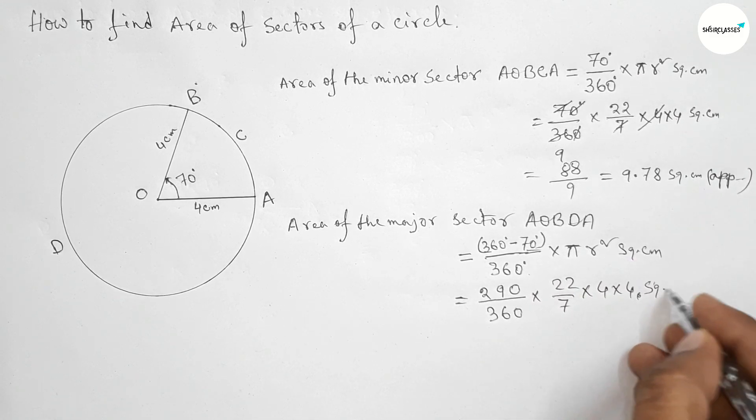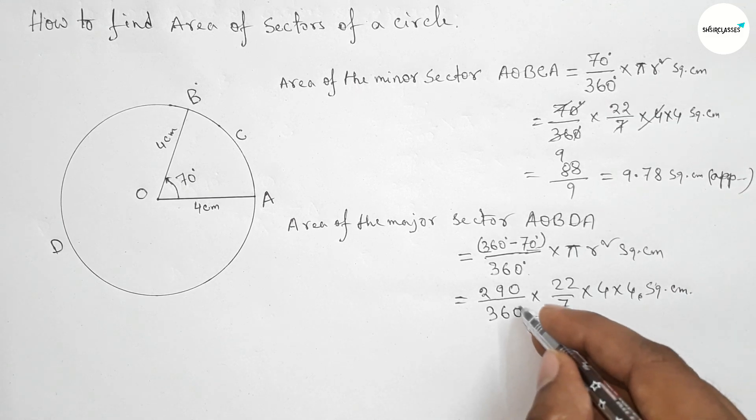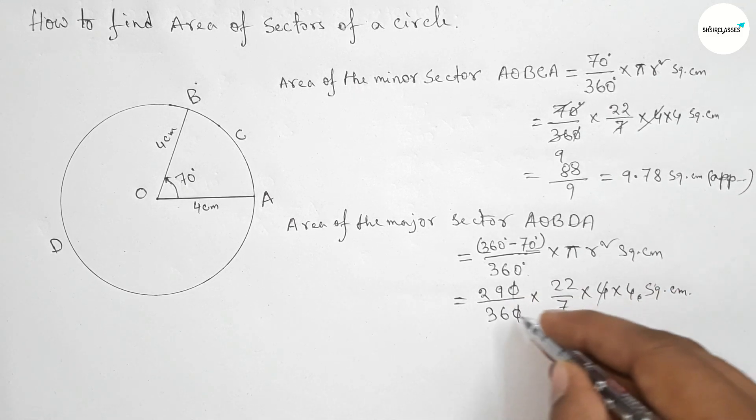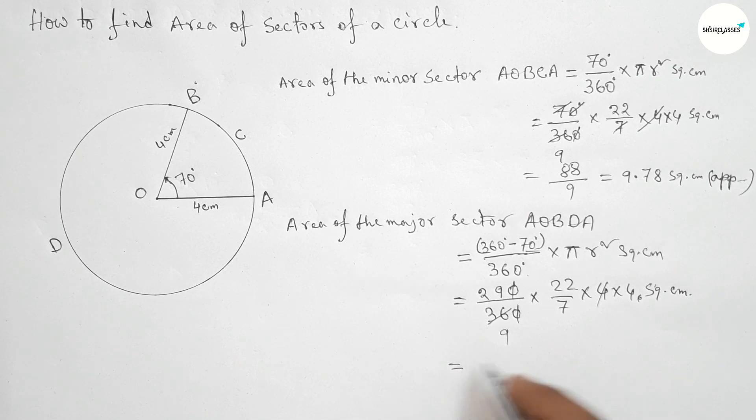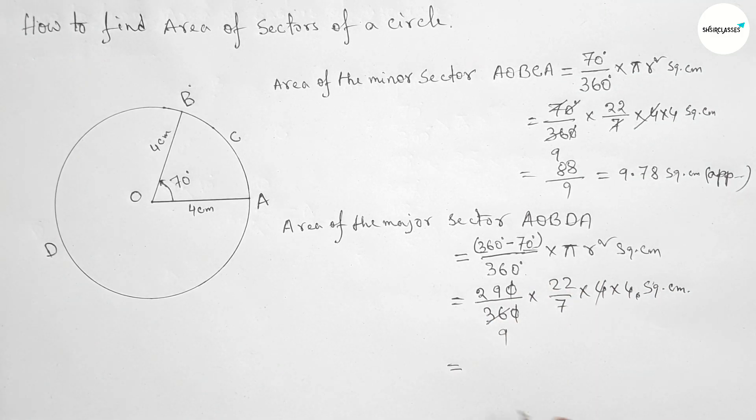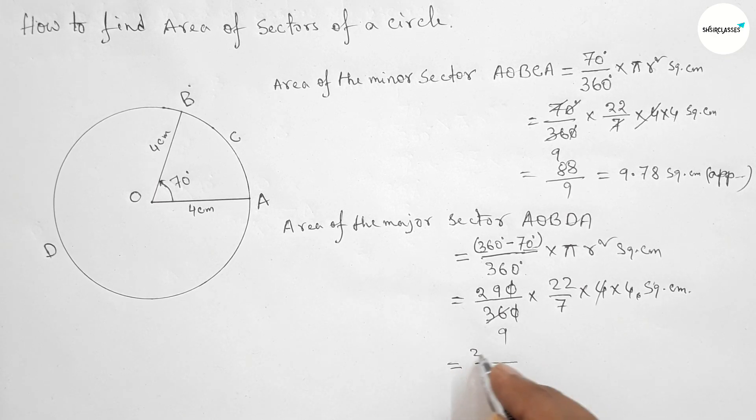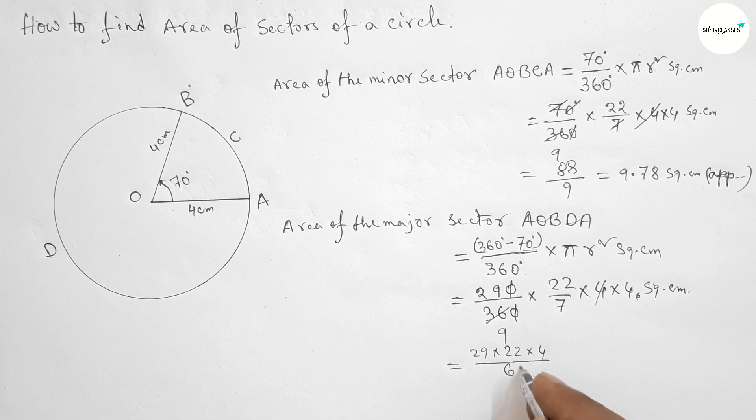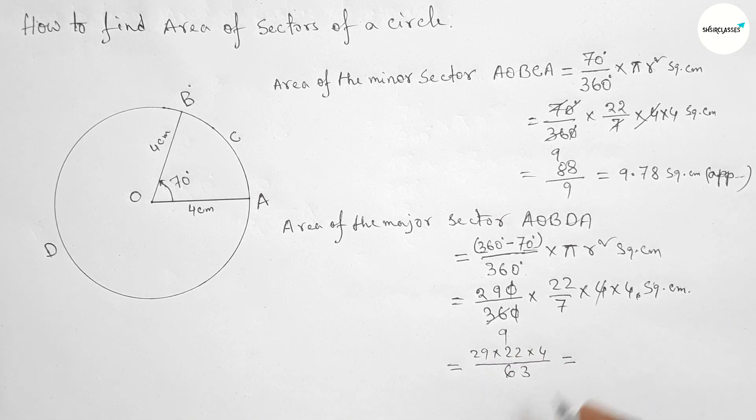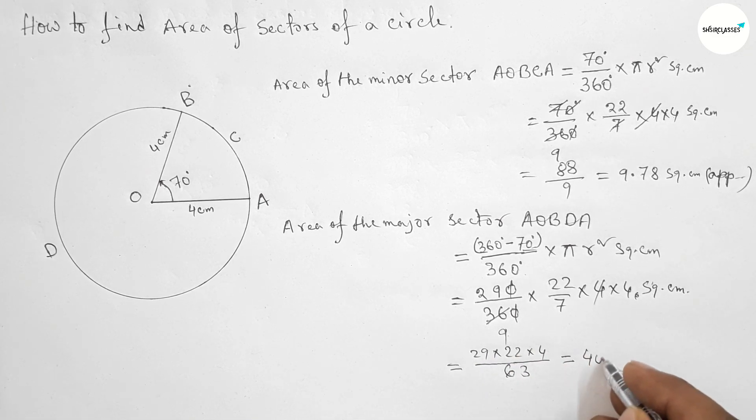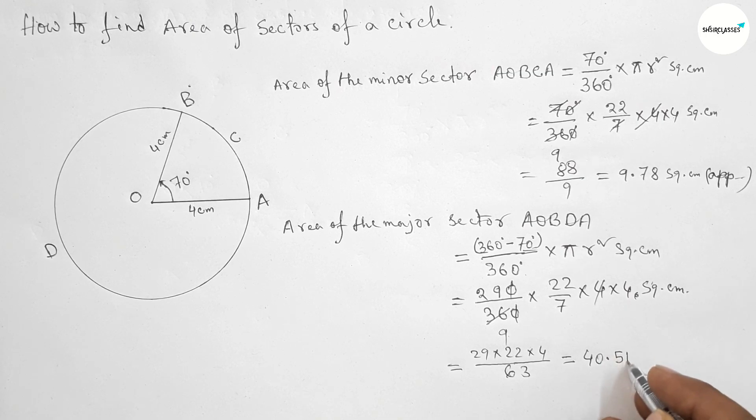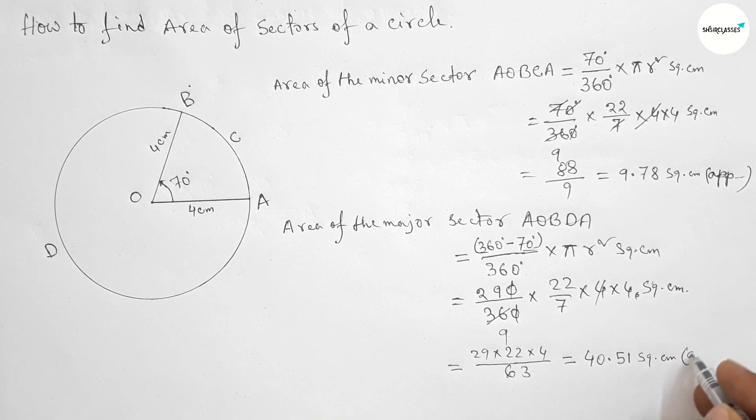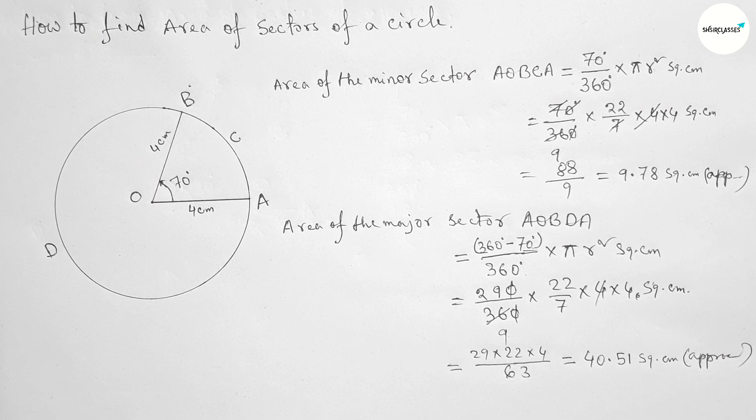So now I am going to calculate this. You have to check this at home. Now I am directly writing down the answer. So 29 × 22 × 4 / 63, this is approximately 40.51 square centimeters.